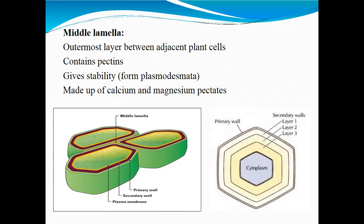Here we have two figures that explain the cell wall in actuality. We have three plant cells, and the layer in between two cells is known as the middle lamella, made up of calcium and magnesium pectates. We have the primary cell wall shown in green, then in dark brown or purple color we have the secondary cell wall, then the plasma membrane. The middle lamella is the layer between two adjacent cell walls.